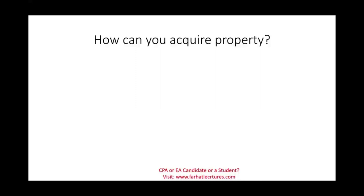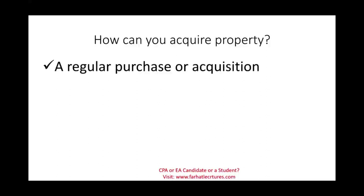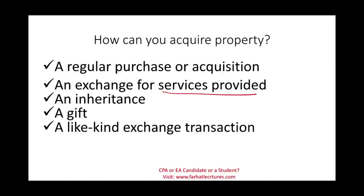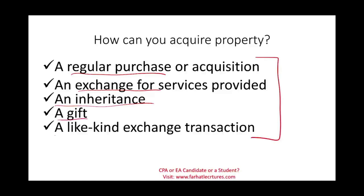The fourth item we need to be familiar with is how we acquired the property — that matters. We can acquire property through a regular purchase: go into a store, go online, or buy through a catalog. Or we can provide a service in exchange for the property. It could be an inheritance — a family member passes away and leaves you the property. Someone can gift it to you. Or it could be a like-kind exchange, where you exchange your property for another property. We need to be familiar with all these acquisition methods, as how you compute the basis depends on the method used.